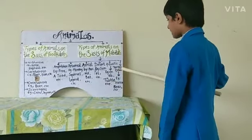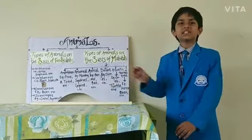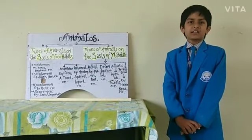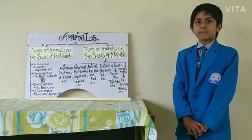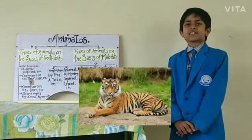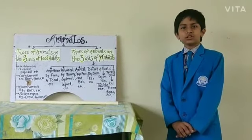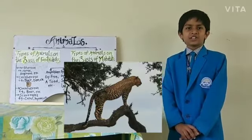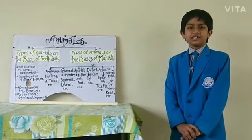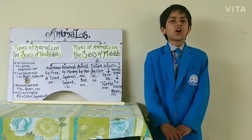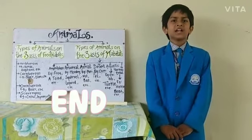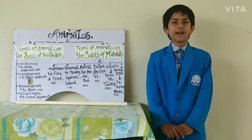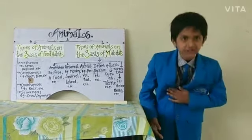Sixth, terrestrial animals. Animals that live on the land are called terrestrial animals. For example, tiger, lion, horse, giraffe, deer, cheetah, etc. Here all topics of types of animals have ended. I hope you all enjoyed my video. Thank you, bye.